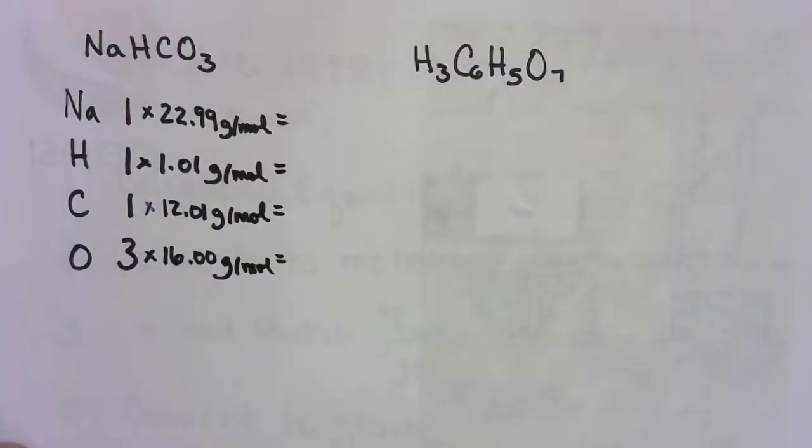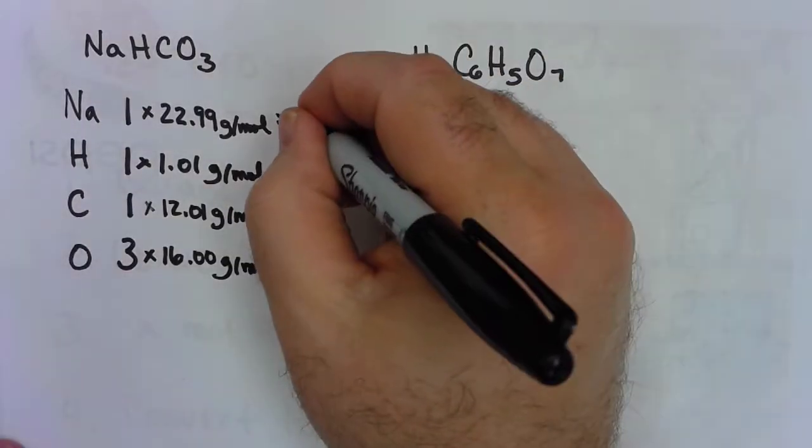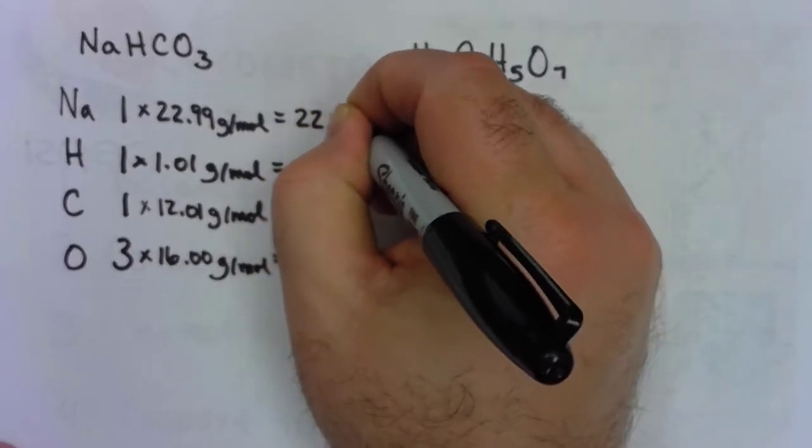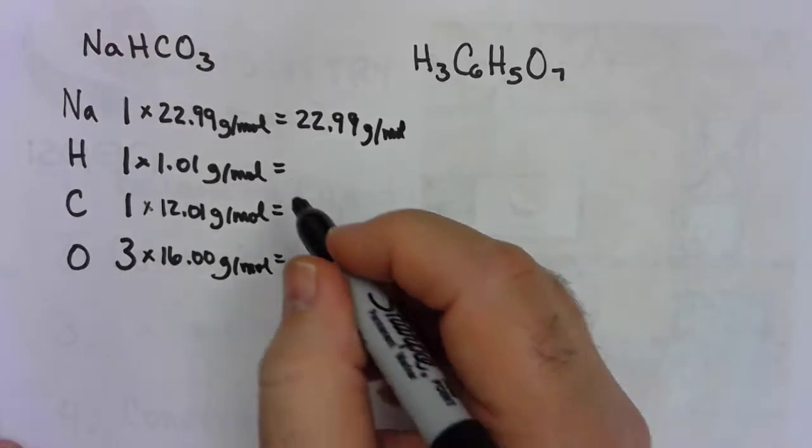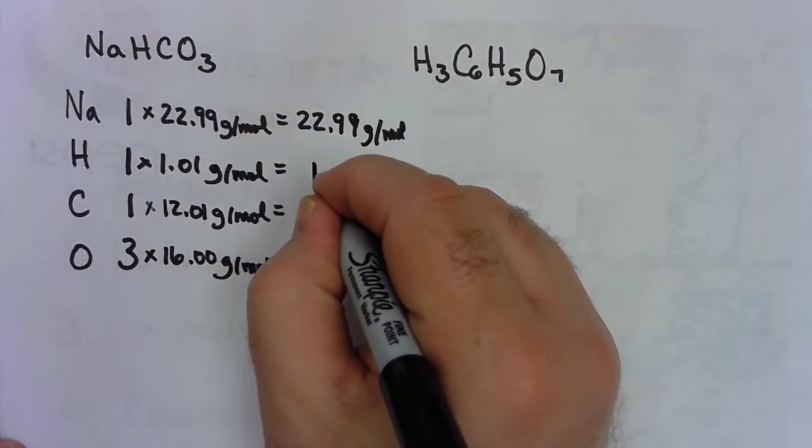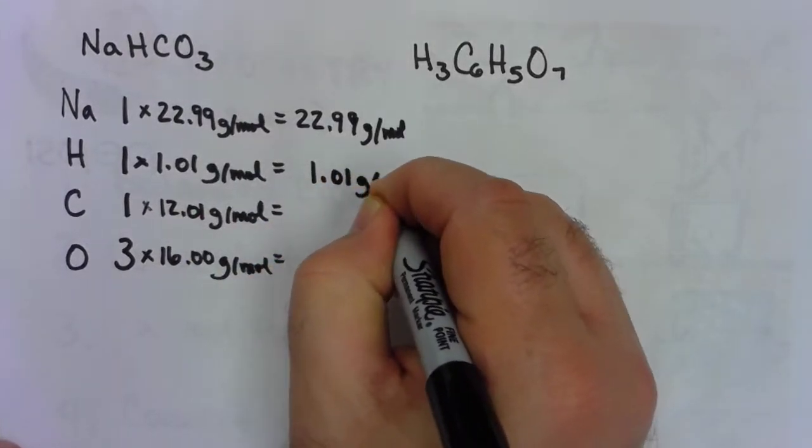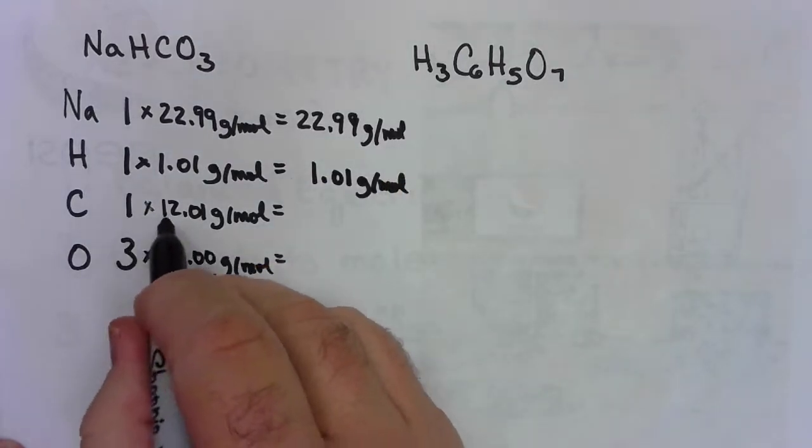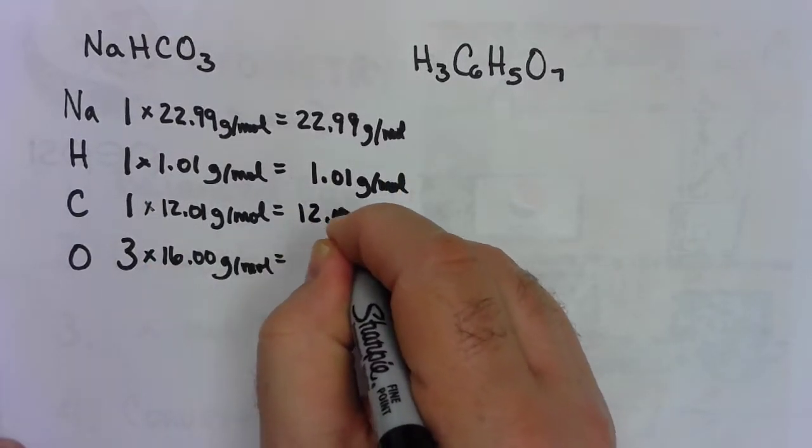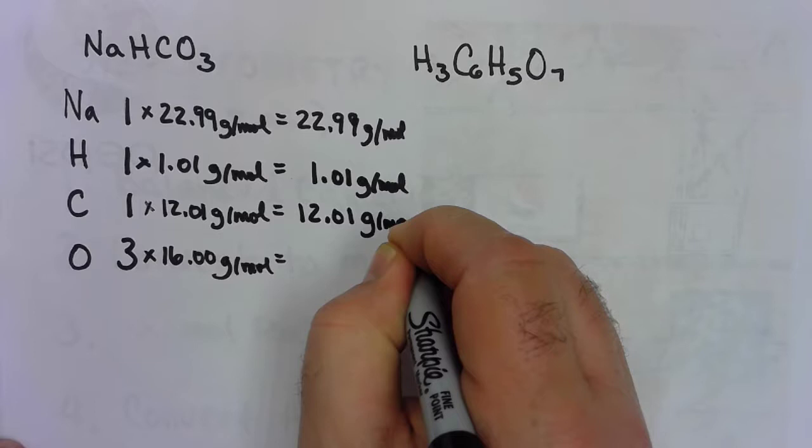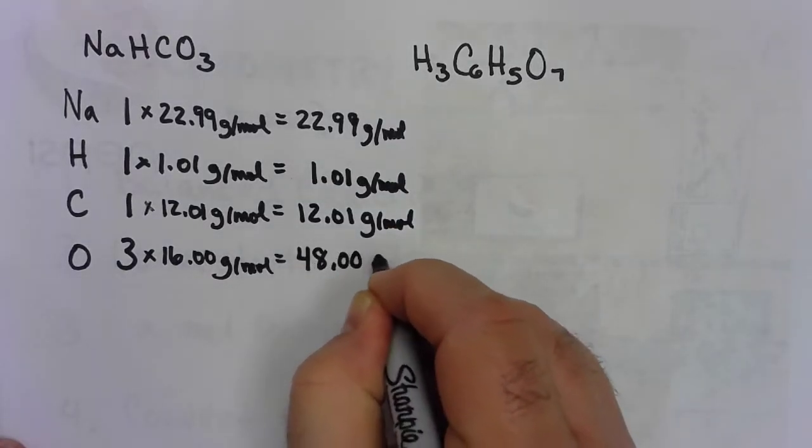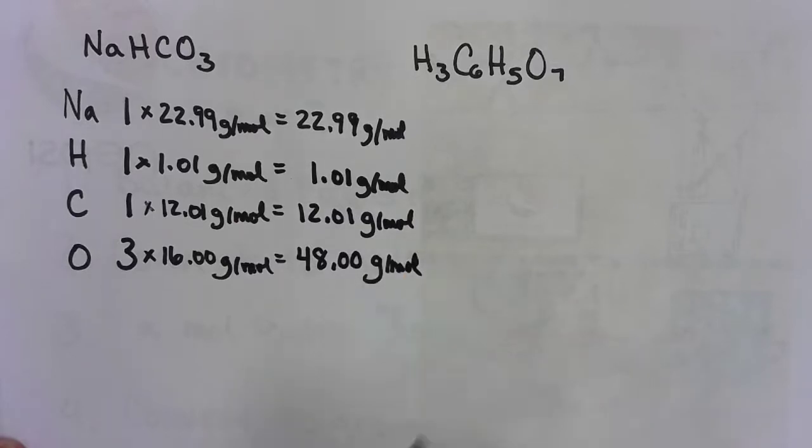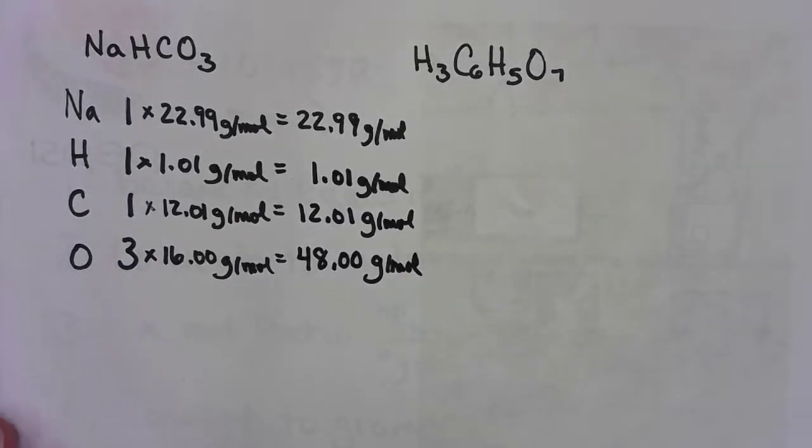Once we get those on there, we multiply them together. 1 times 22.99 is still 22.99 grams per mole. Should have left myself a little more room. 1 times 1.01 is 1.01. 1 times 12.01 is 12.01. And 3 times 16 is 48 grams per mole. You must be careful when you're doing this kind of multiplication.